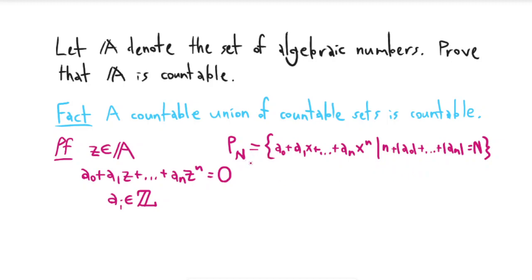We want to note that for each choice of n greater than or equal to 0, this is a finite set. The reason it's finite is because all of the a_i's are integers, and so there's only finitely many choices for the a_i's so that an expression like this holds, because eventually the absolute value of the a_i's is going to be too large.